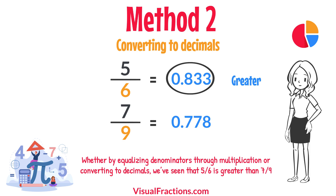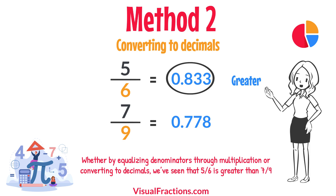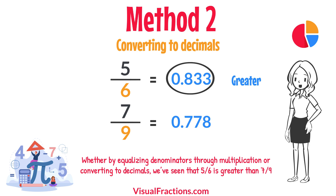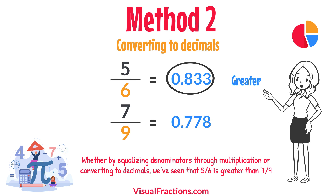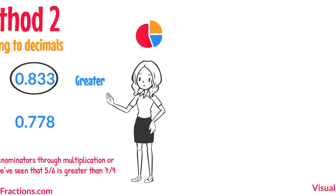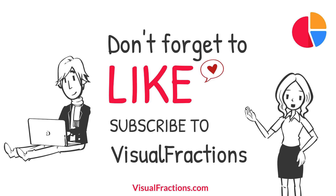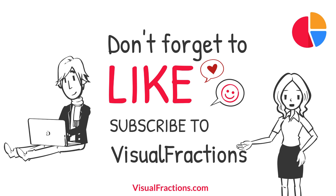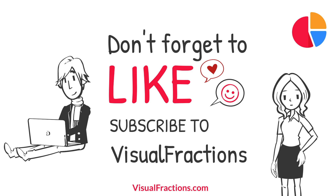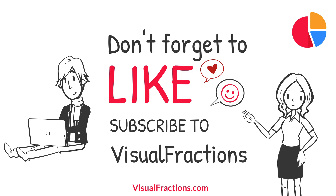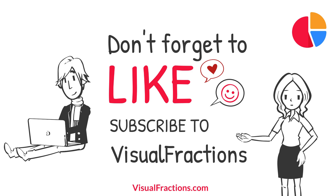And there you have it! Whether by equalizing denominators through multiplication or converting to decimals, we've seen that 5 sixths is greater than 7 ninths. If you found this tutorial helpful, go ahead and smash that like button and don't forget to subscribe to Visual Fractions. Thanks for watching!